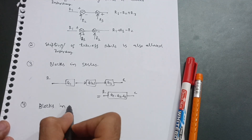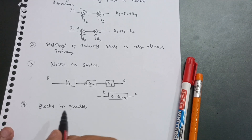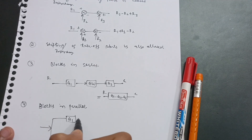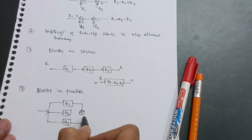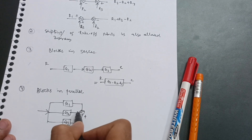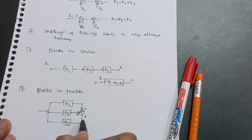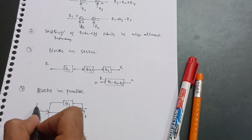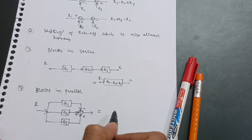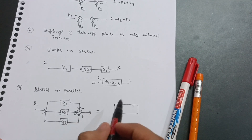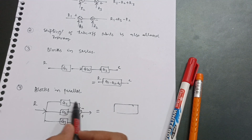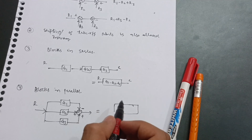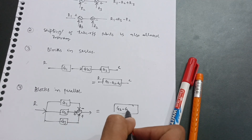The fourth rule is blocks in parallel. When blocks G1, G2, and G3 are connected in parallel to a summing point — these can be positive or negative, depending on the feedback signs; that is your choice. Here G1 is connected to the summing point with negative feedback, so I can write G2 minus G1.